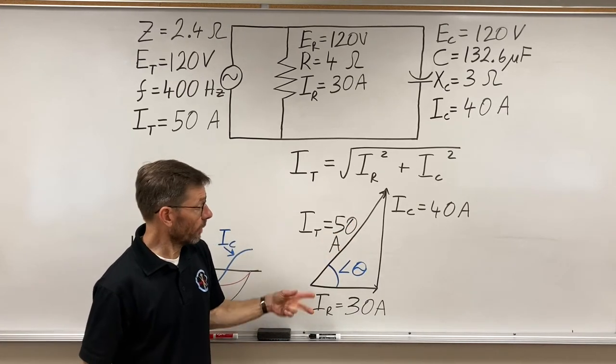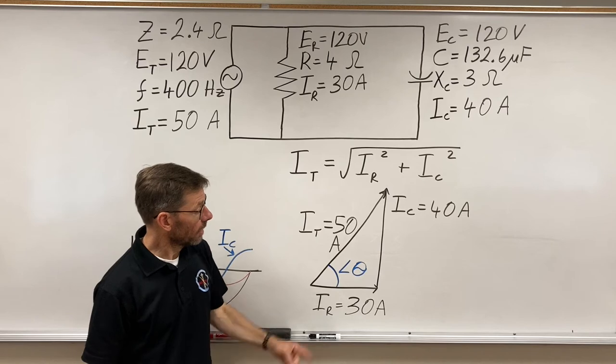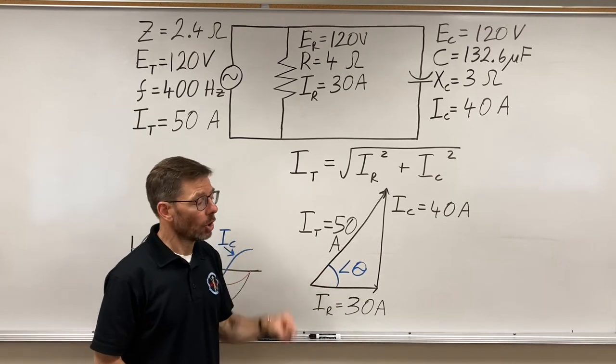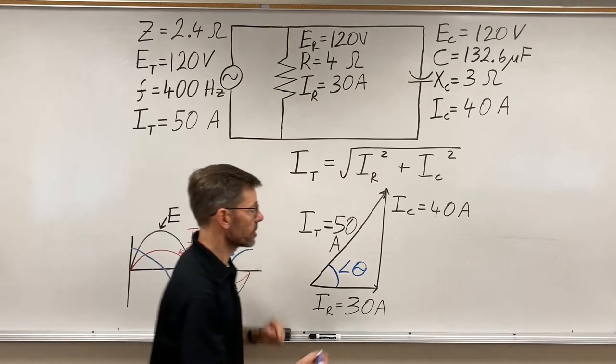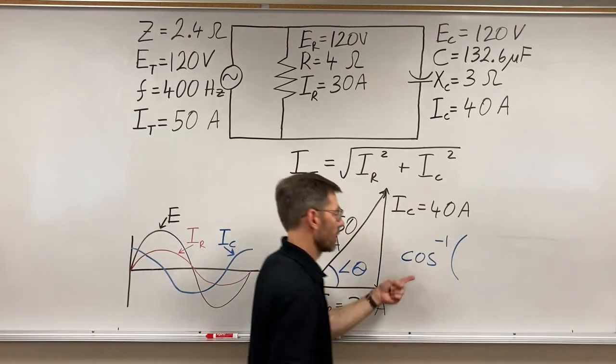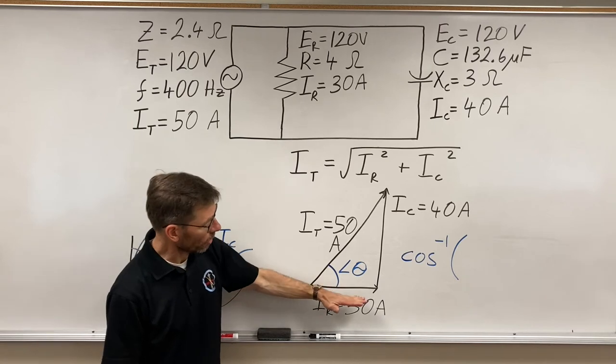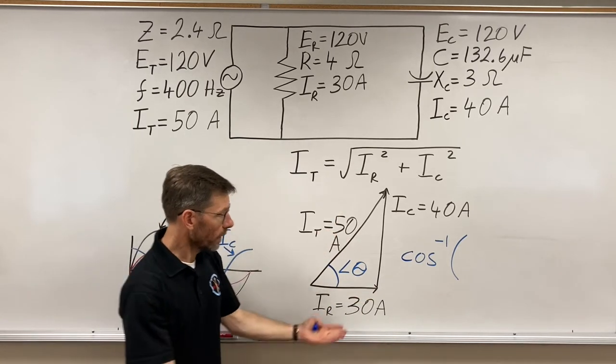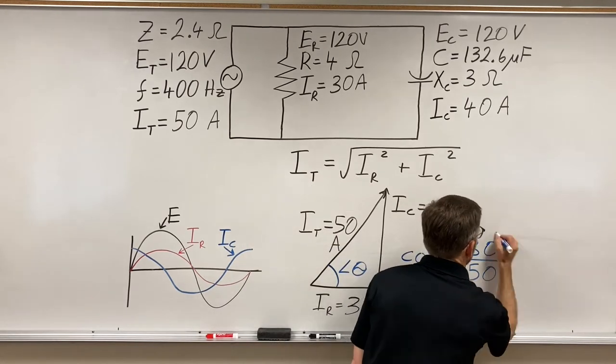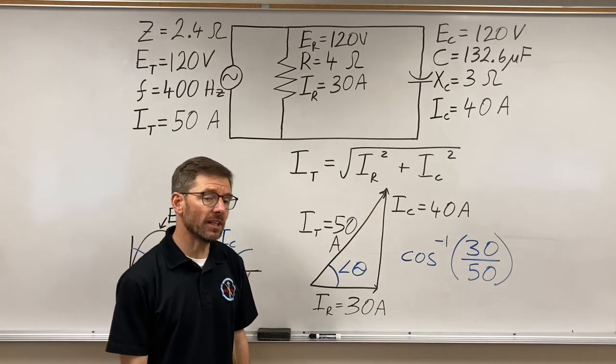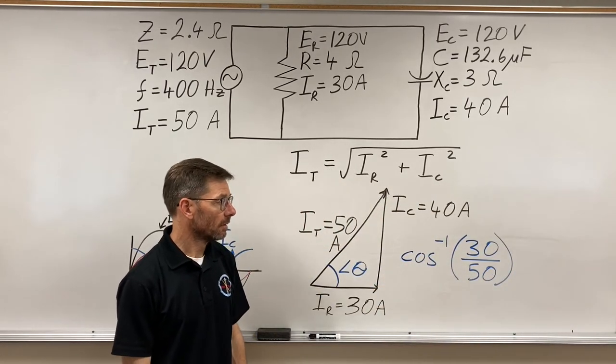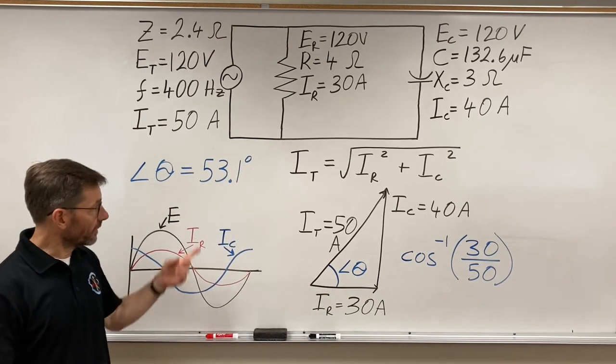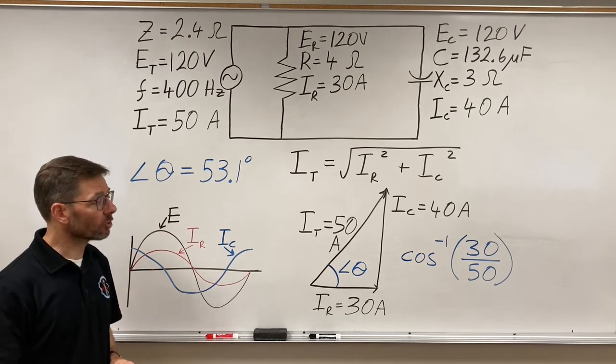So what we do when we know the ratio is we put in the arc cosine, or second function cosine. That's what it gives you in the calculator, and we put the ratio of this side adjacent over hypotenuse. We put 30 divided by 50 in there, and what would we get? We get 53.1 degrees.